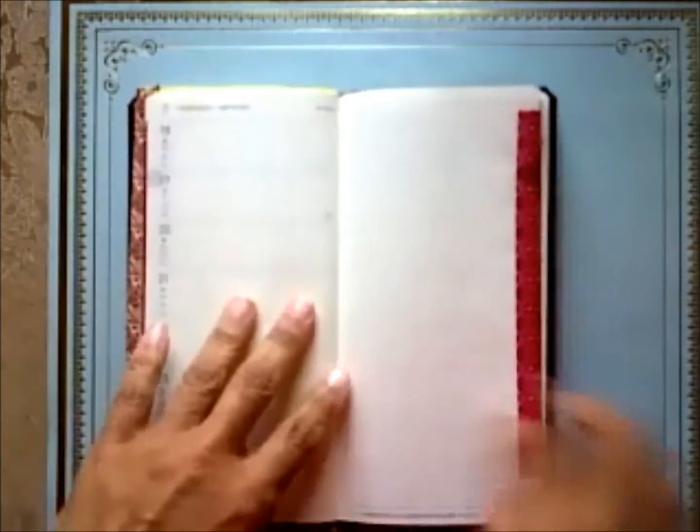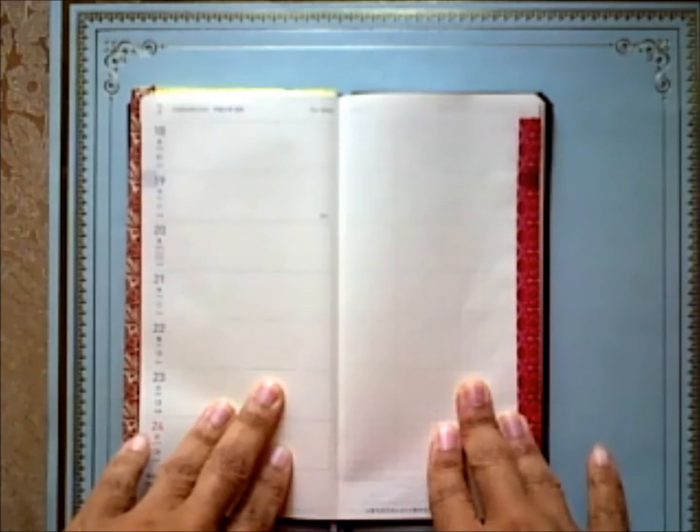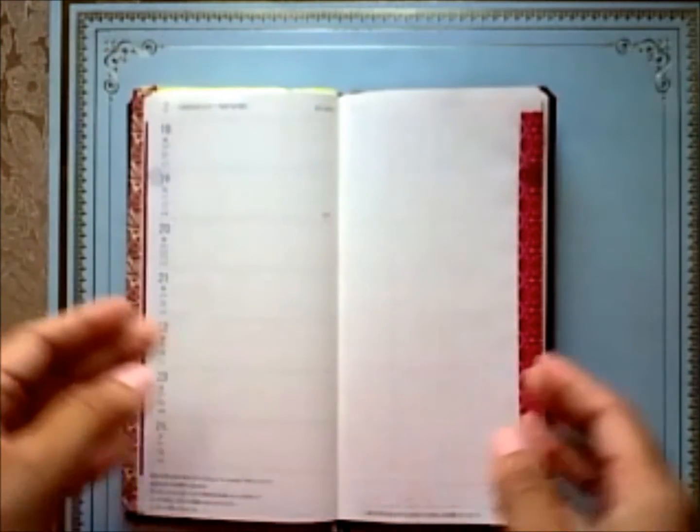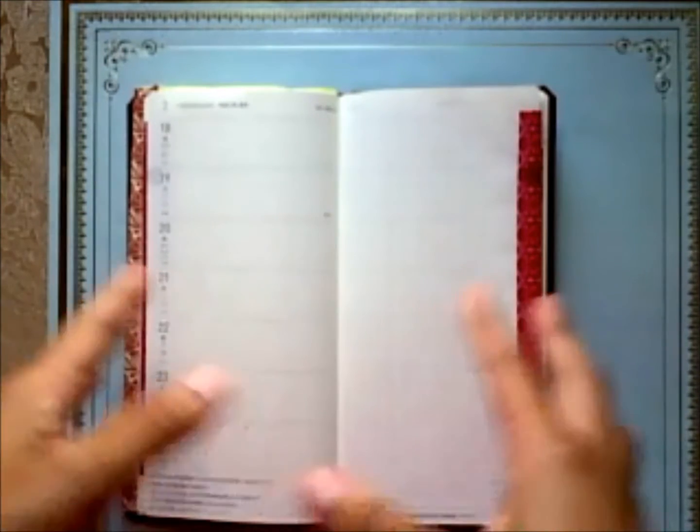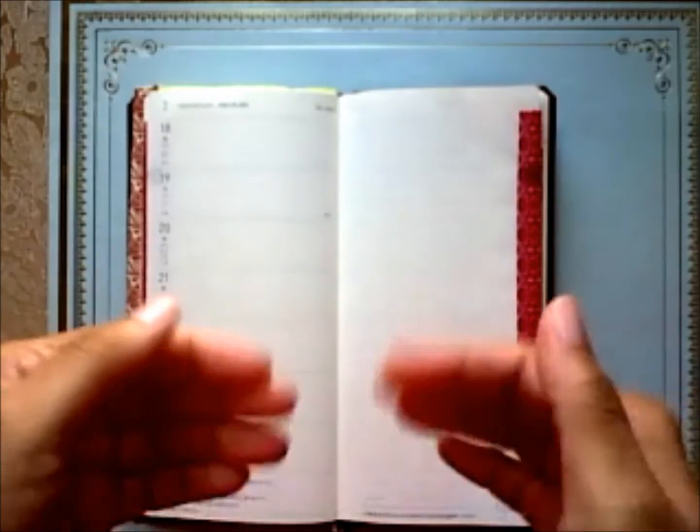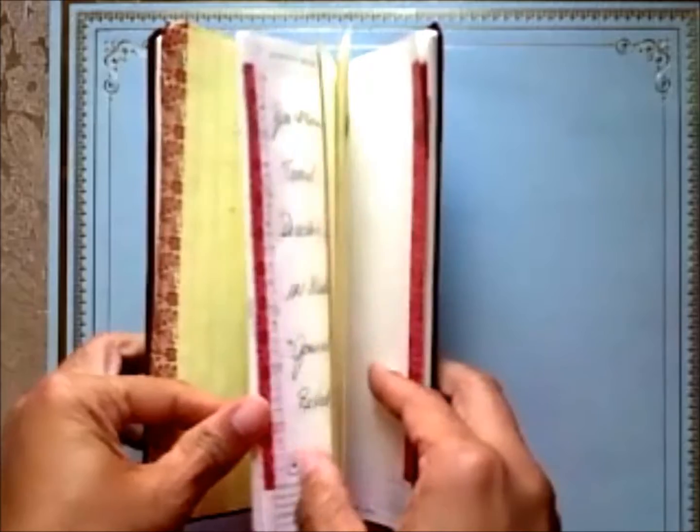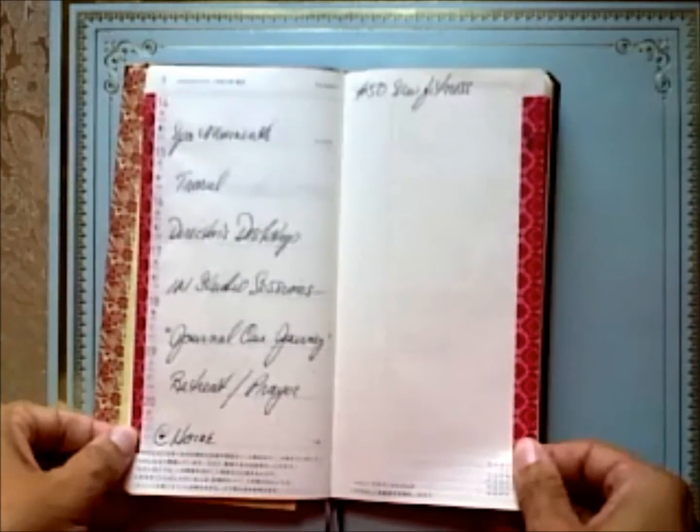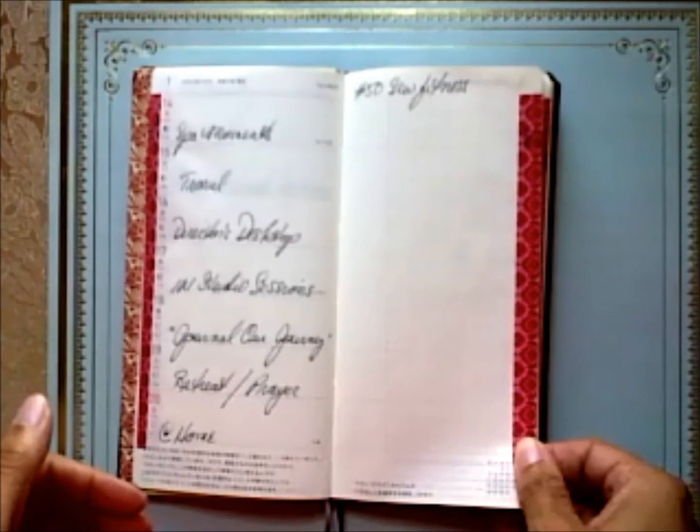For the Hobonichi, texture-wise it was amazing Tomoe River paper. However, it was too small for my on-the-go everyday. It's not a good commonplace book for me because I love to write. If you love to write, then this is going to be too small for you.